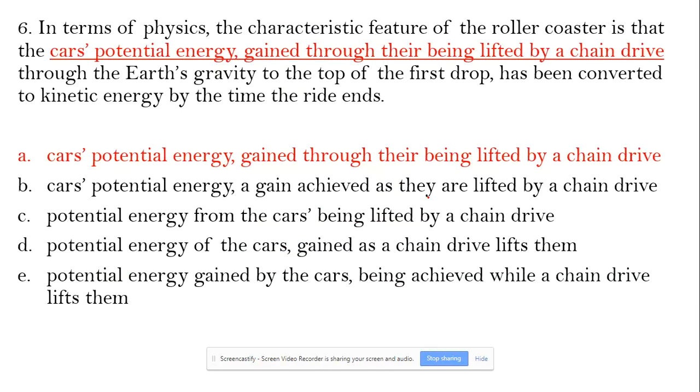Hello, I am back with one more sentence. Here we go. The sentence is: in terms of physics, the characteristic feature of the roller coaster is that the car's potential energy gained through their being lifted by a chain drive through the earth's gravity to the top of the first drop has been converted to kinetic energy by the time the ride ends.